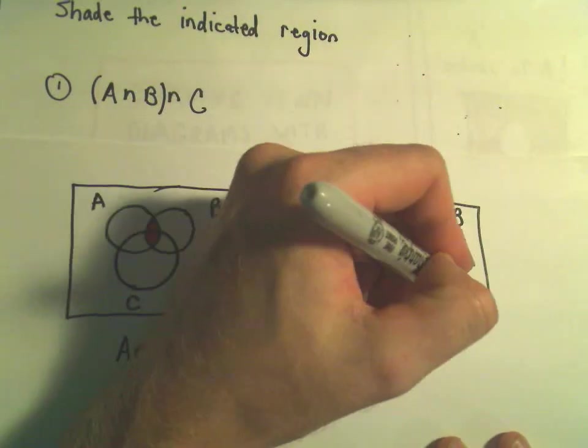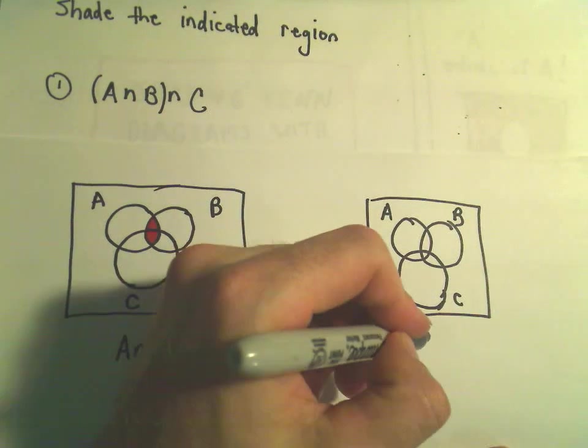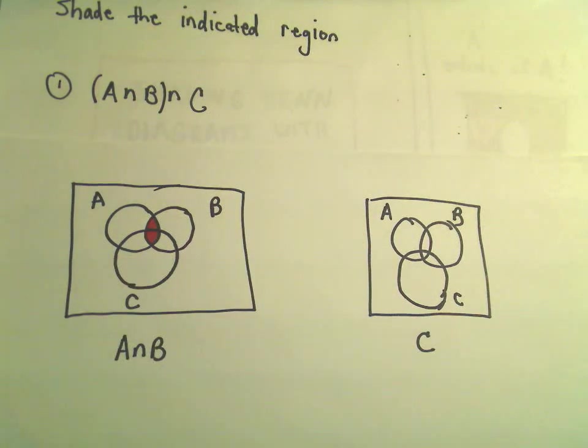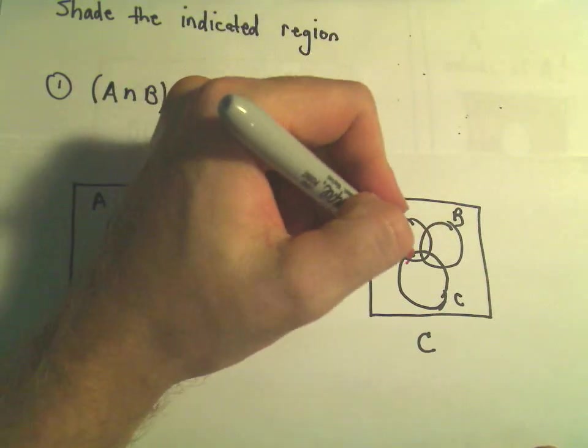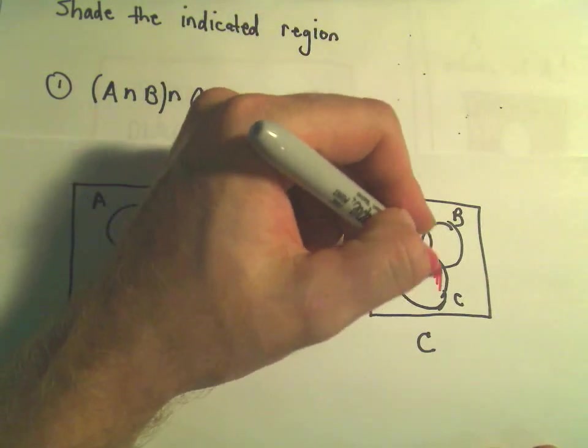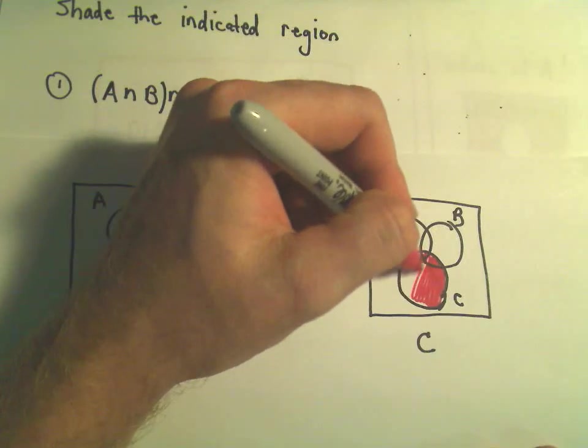So here's A, B, and C. Now, if I just shade circle C, well, that would be everything in circle C here. That's our other set here.